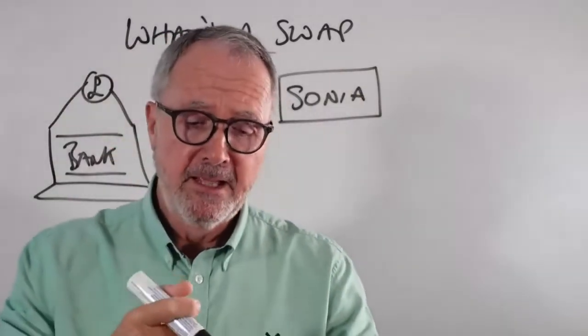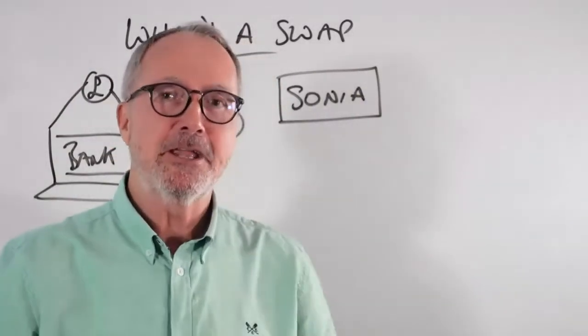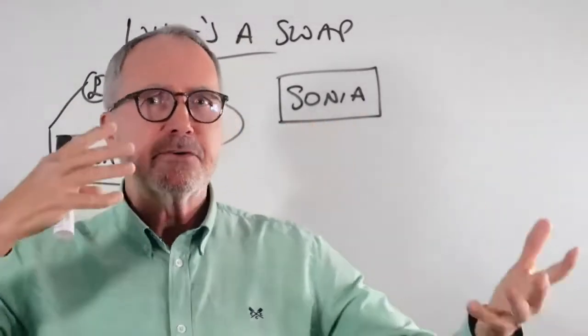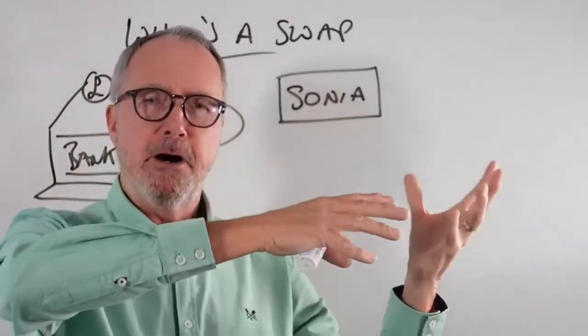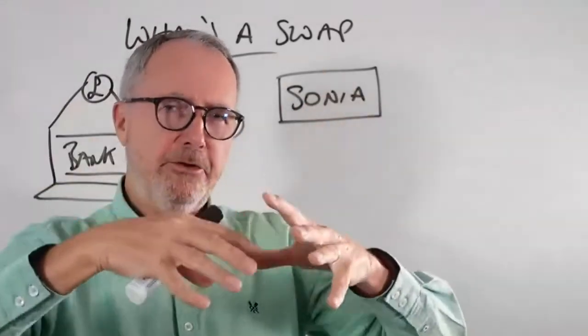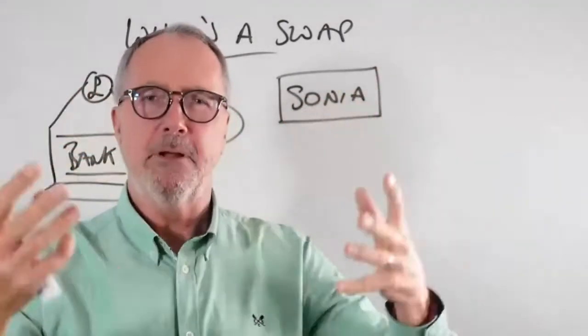It used to be called the LIBOR, but the LIBOR was rigged by some bankers, so they got rid of that and they called it SONIA. Now what this is, is the rate of interest that banks lend to each other overnight. When they've got surplus money, they throw it into the wholesale market effectively and lend it to each other on SONIA rate. And loads of other money goes in there as well. And that's generally the wholesale market. That's where we get our money from in mortgage lending.